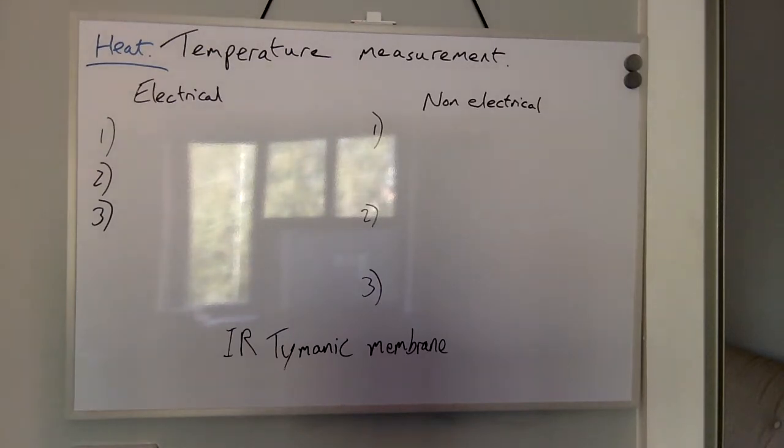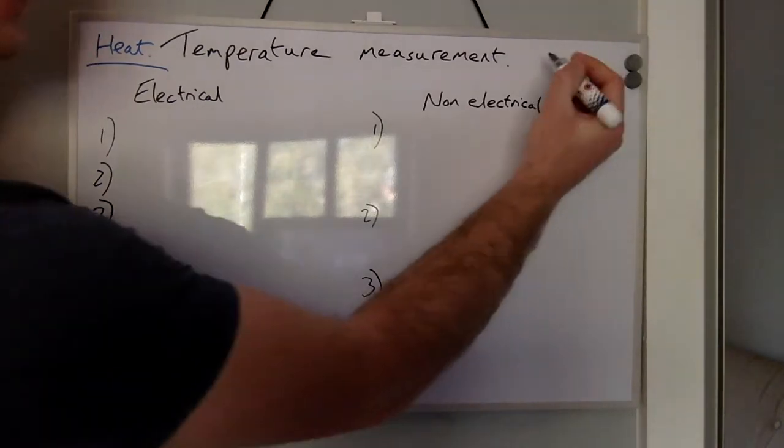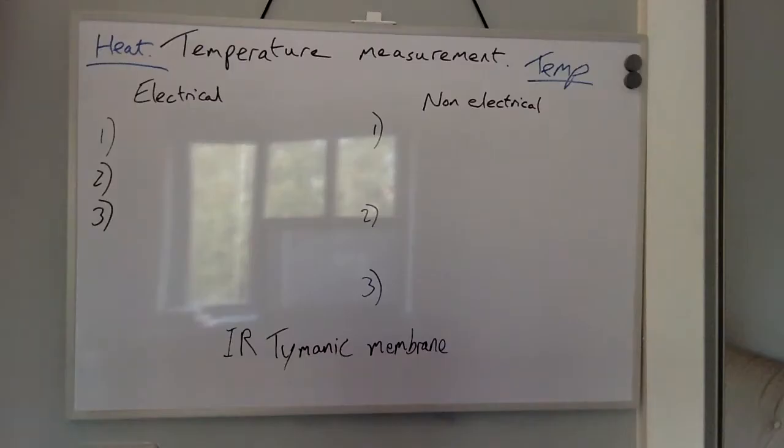Heat energy gets transferred from a hotter to a colder substance. And what is temperature? Temperature refers to the thermal state of a substance. It reflects the potential for heat transfer.